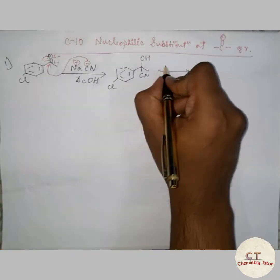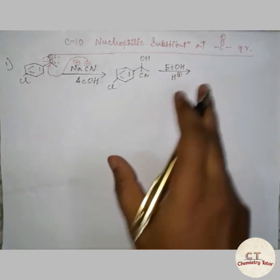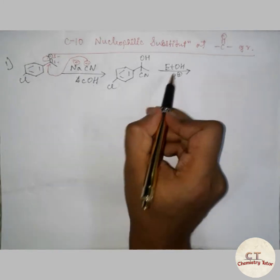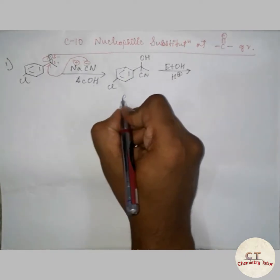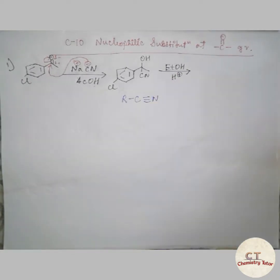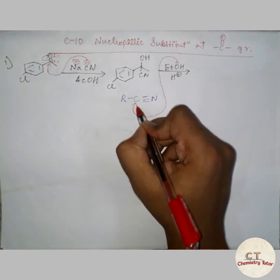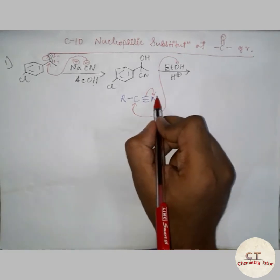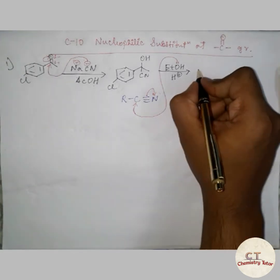This product, further on reaction with ethanol in the presence of H⁺ — what will the product be? The presence of H⁺ indicates acid hydrolysis in the presence of an alcohol. Writing the group as R–C≡N, the lone pair on oxygen in the ethanol is going to attack the carbon, since carbon is less electronegative. Negative charge will reside there, and this negative charge will again abstract a proton from the solution itself, giving the product.